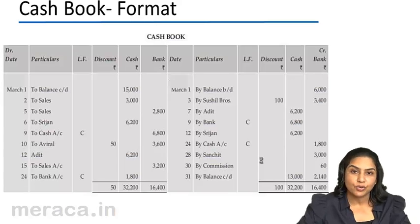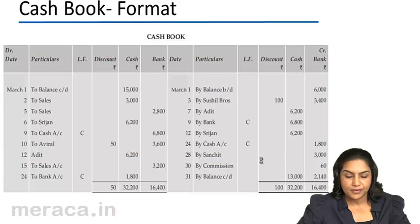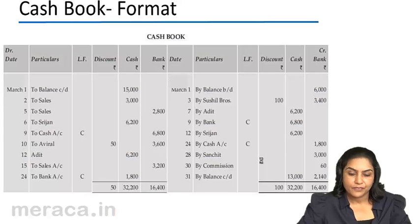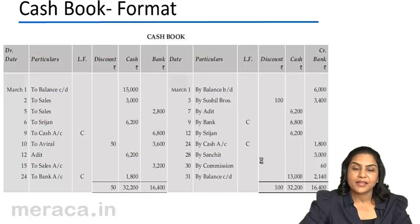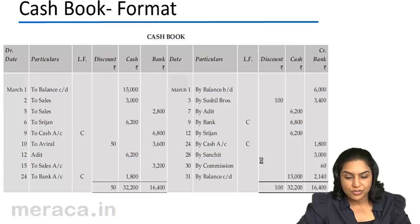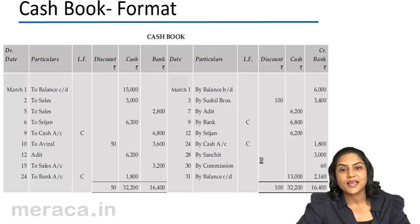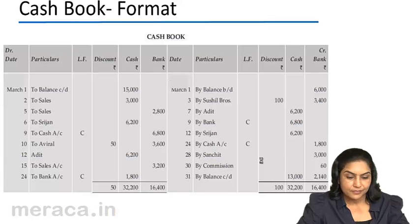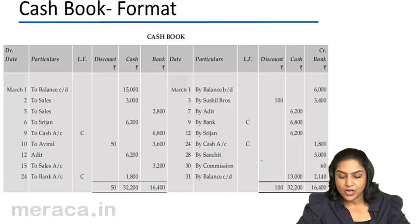How does an account holder keep track of his bank transactions? He does this by preparing the bank account, which is essentially in the cashbook. This is the format of a triple column cashbook with discount, cash, and bank columns.